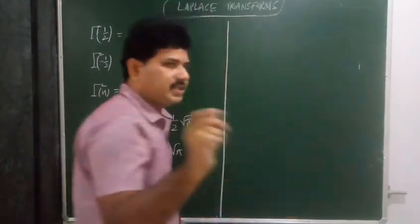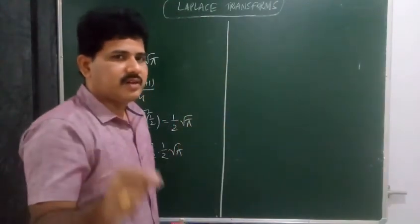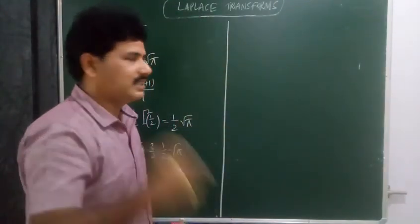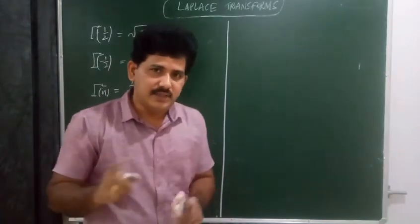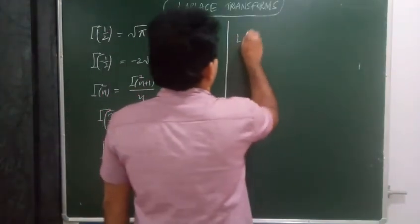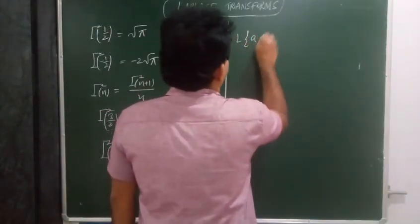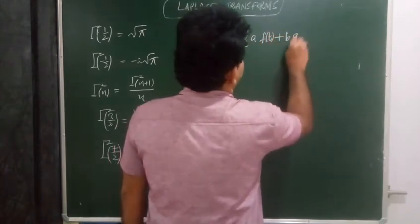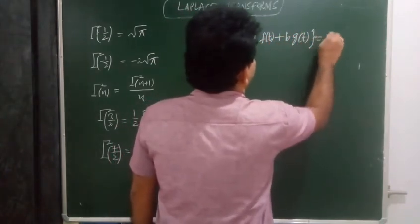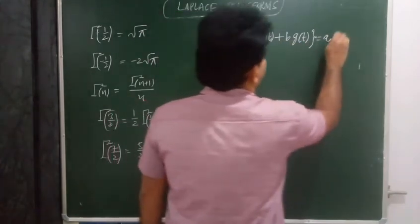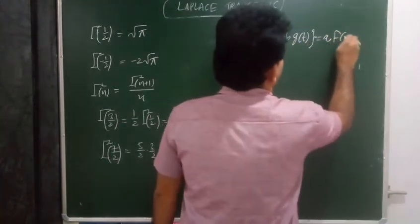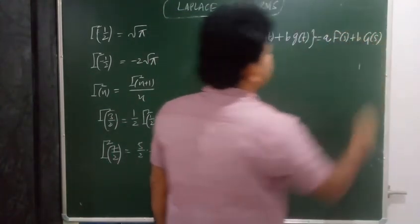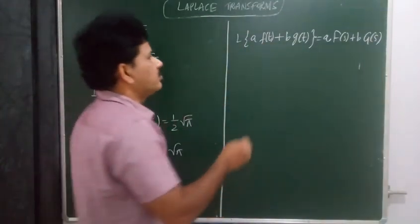If f(t) and g(t) are two functions defined for t greater than 0, and a and b are two scalars, then L{a·f(t) + b·g(t)} equals a times L{f(t)} plus b times L{g(t)}, that is called the linearity property.